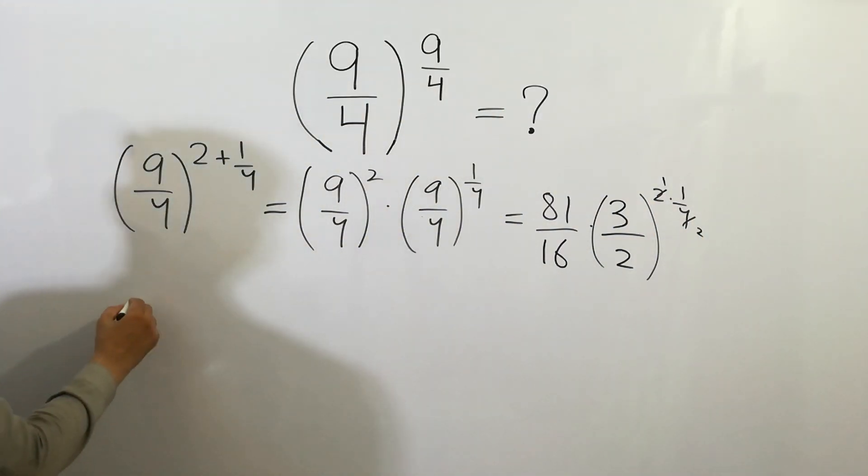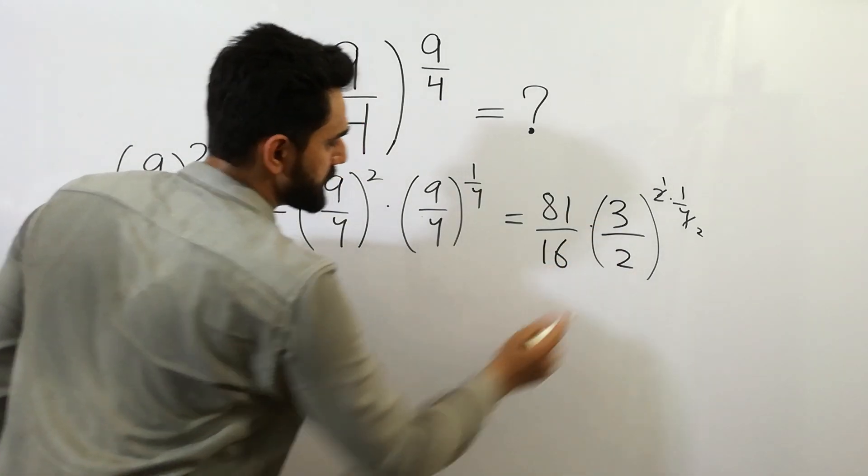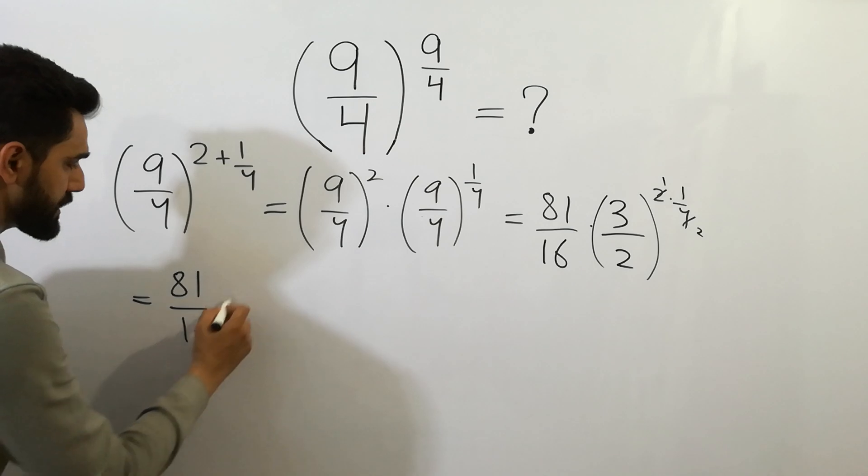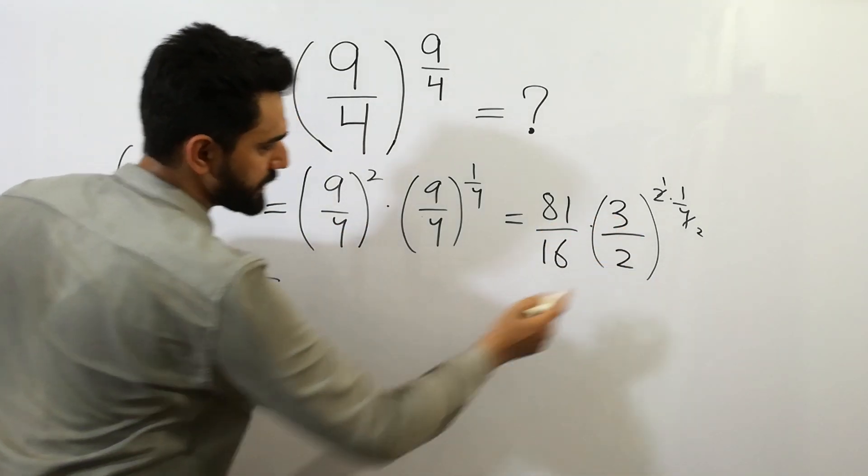Next, 81, we can write here, divided by 16, we get 1 by 2 here,